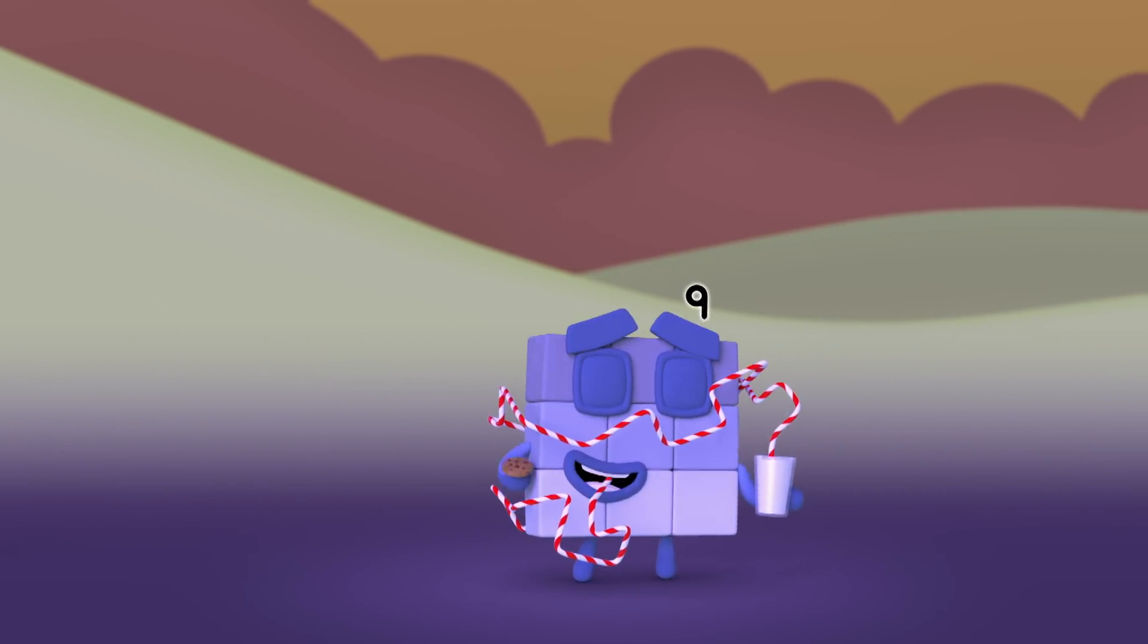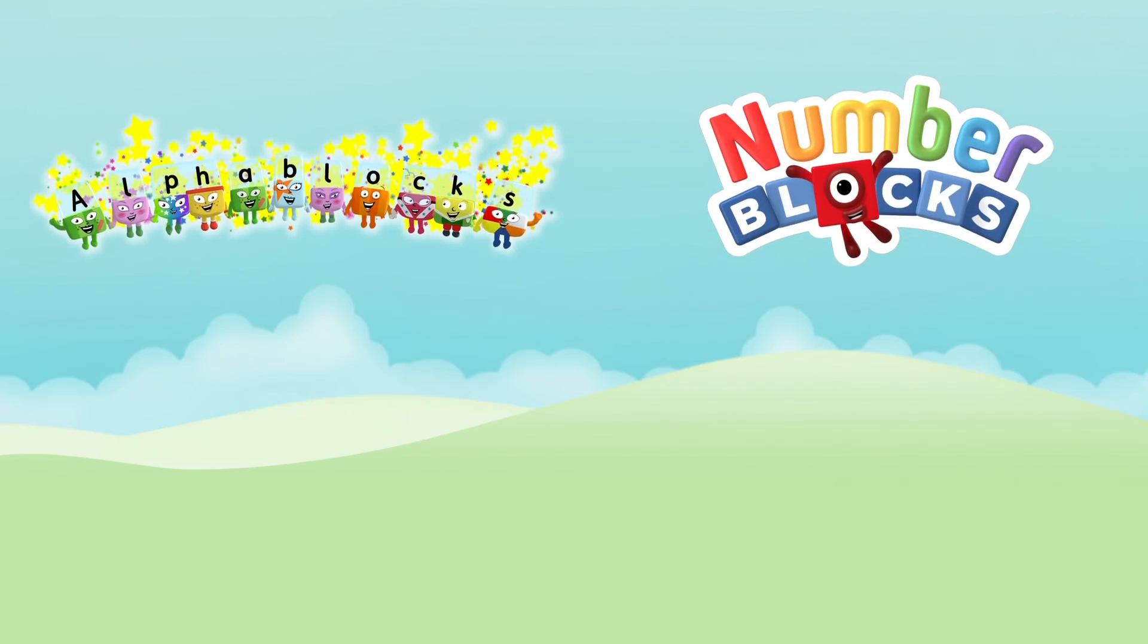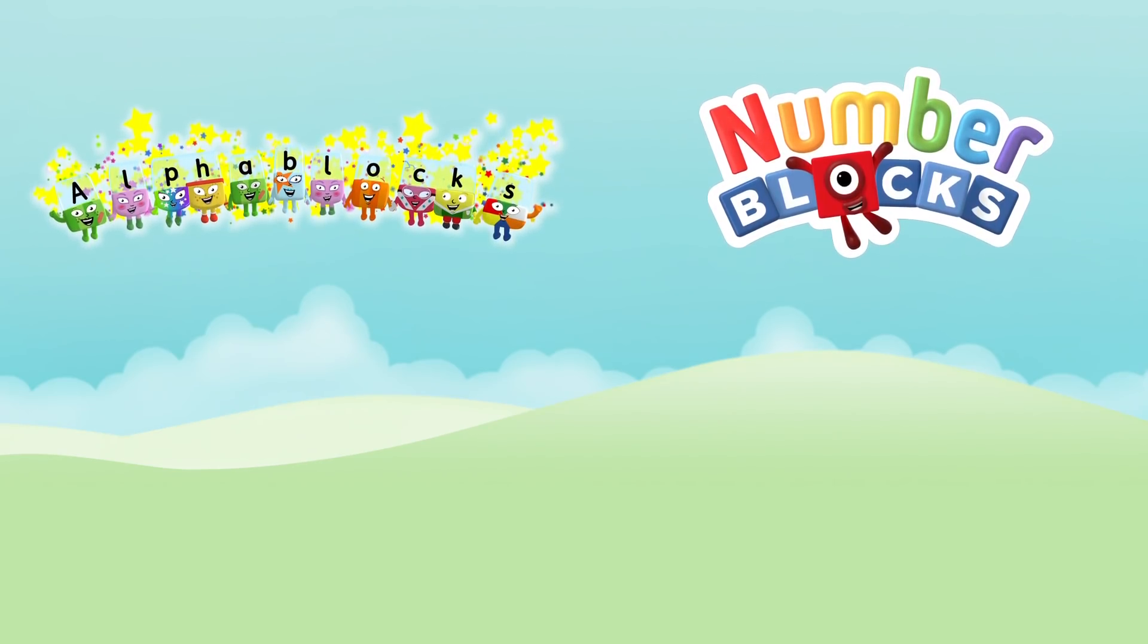Yum, yum. One, two, three, four, five Numberblocks. One, two, three, four, five Numberblocks. One and another one is two, and another one is me. That's three. Five, four, three, two, one. Time for some Numberblocks. You can count on us. We're the Numberblocks.